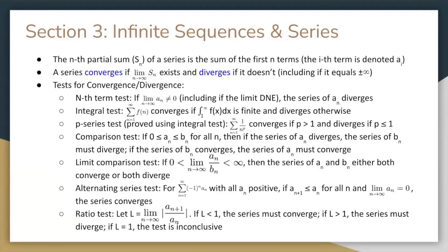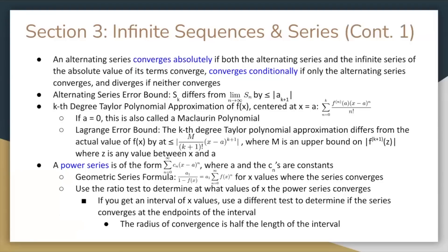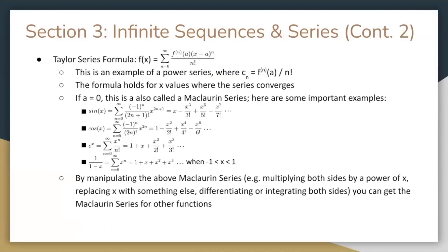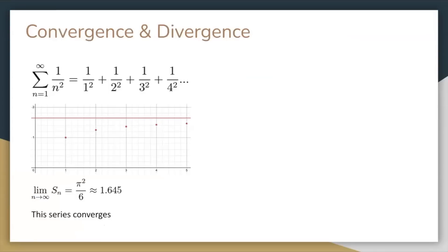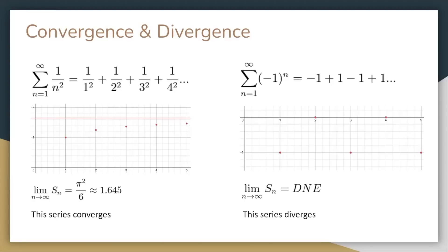Last, but certainly not least, infinite sequences and series. This section has an overview that is three slides long. So an infinite series converges if the nth partial sum approaches a certain value as n approaches infinity. An example is the series of 1 over n squared from n equals 1 to infinity. The graph shows the first few partial sums, and as you approach infinity, the partial sum approaches the value indicated by the red line — which is pi squared divided by 6. On the other hand, if we consider the series negative 1 plus 1 minus 1 plus 1 and so on, the nth partial sum continuously oscillates between negative 1 and 0, so the limit as n approaches infinity of the partial sum doesn't exist, and the series diverges.